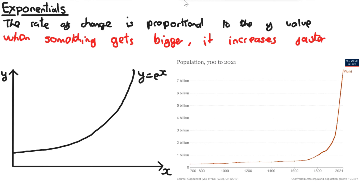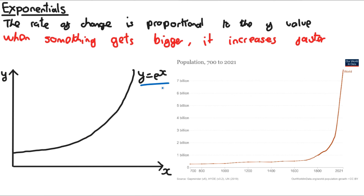There are many examples where e to the power of x is a good model, whenever something gets bigger and increases faster. To make models more specific to each dataset, rather than just using e to the power of x you can apply transformations, going as far as y equals a times e to the power of (bx + c) plus d, and adjust a, b, c, and d to change the shape of the graph.